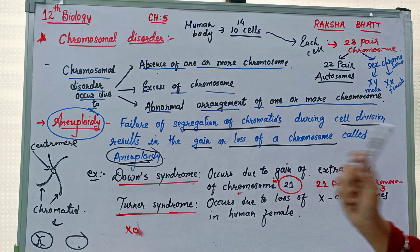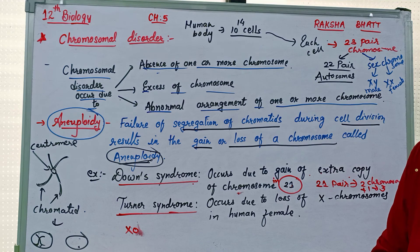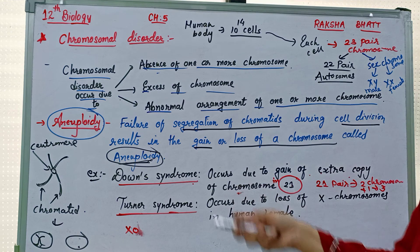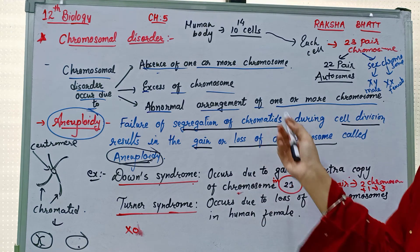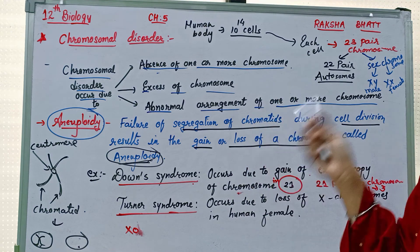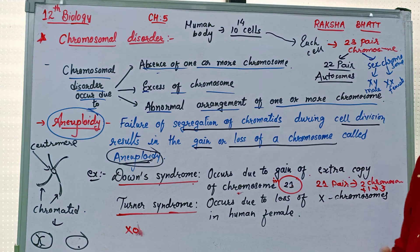So this is the information about aneuploidy. In aneuploidy, chromosome number is increased or decreased. Down syndrome: in the 21st pair there are three chromosomes instead of two. Turner syndrome: occurs due to loss of the X chromosome — the female has XO instead of XX. This is the most important topic for the board exam.